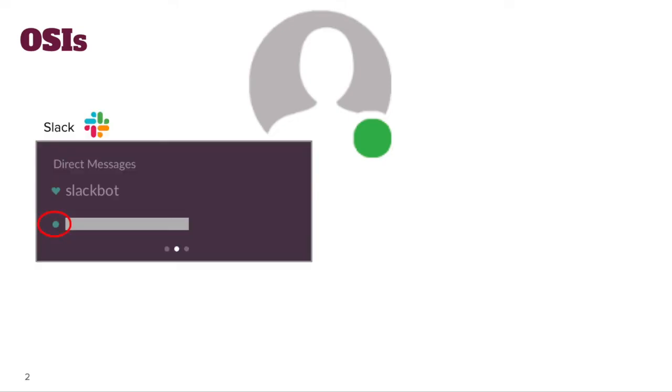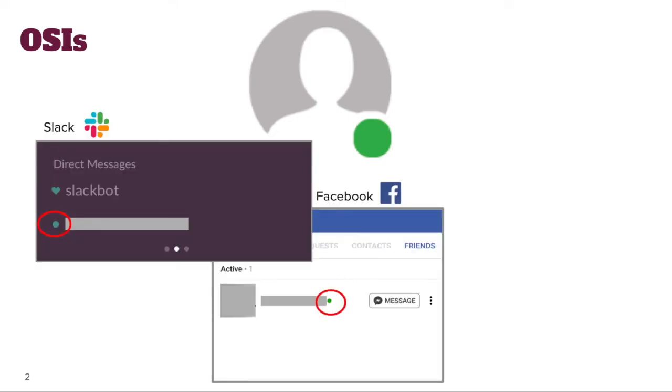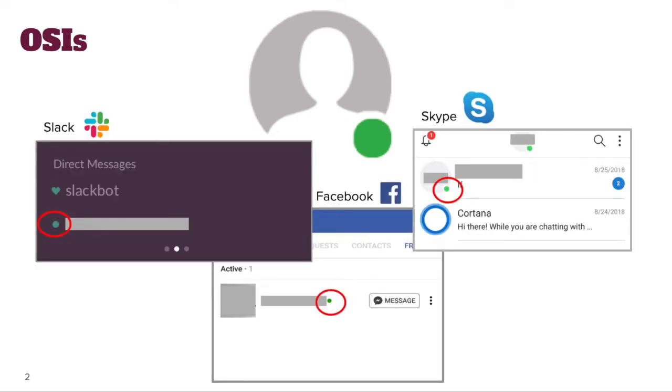Online status indicators, or OSIs, are interface elements that convey whether someone is online. You can think about the green dots that you've probably seen in popular apps such as Facebook, Slack, or Skype. But after this talk, you'll have a much broader understanding of what OSIs might look like.